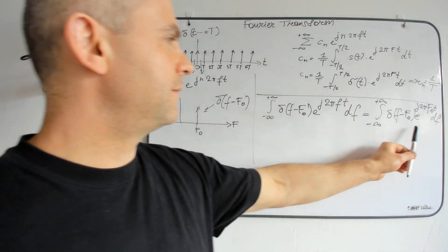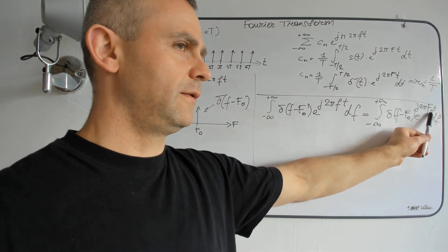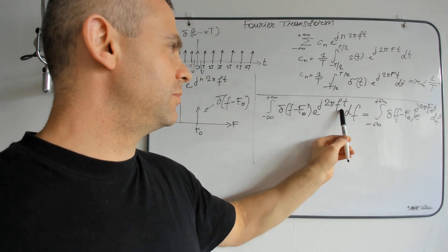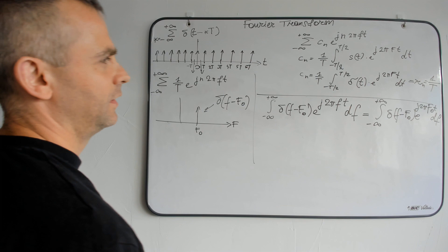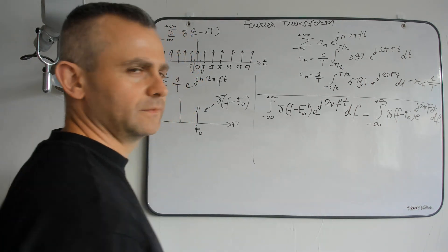Exponential of j2πf0 t df. So, the exponential got the f0, instead of variable f, which is delay in delta function.